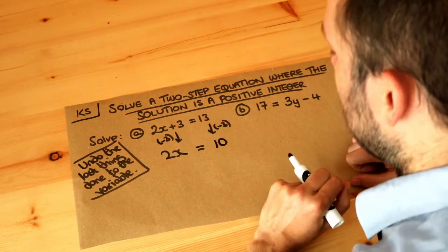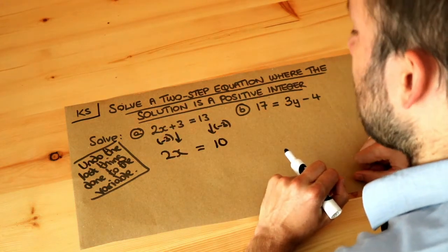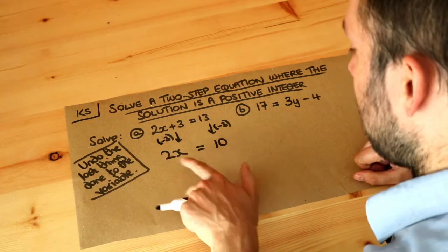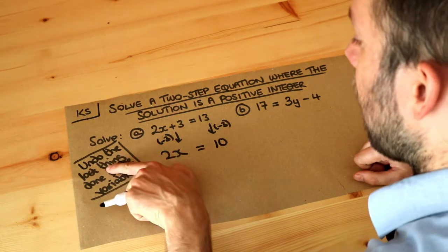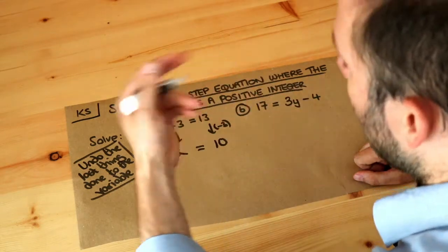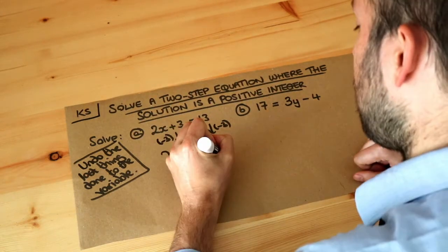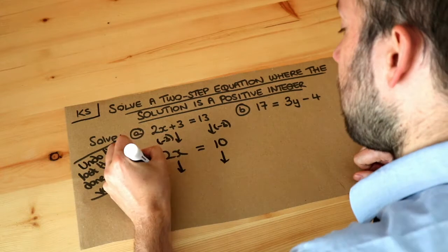Now let's think about the last thing done to the variable. x was multiplied by 2, so we want to undo that last thing. We want to undo the multiplied by 2. What's the opposite of times by 2? Dividing by 2.